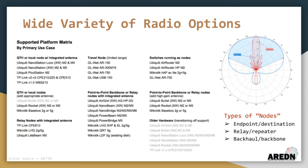From this, you can see that different types of radios serve different functions within the wider mesh network. You could categorize them generally as local endpoint nodes, intermediate relay nodes, or high-speed backhaul nodes based on the purpose they serve for the network as a whole.